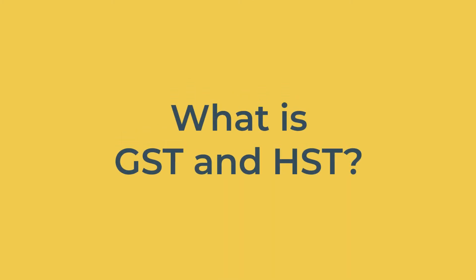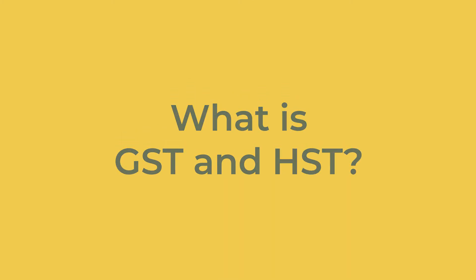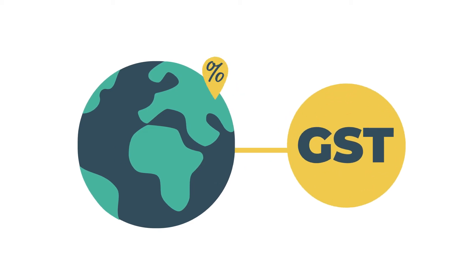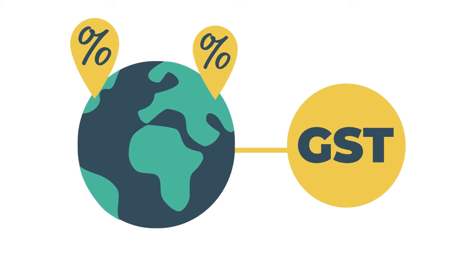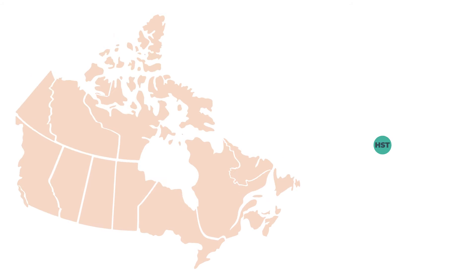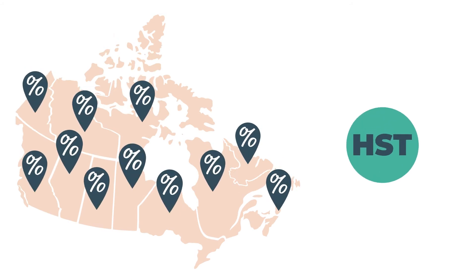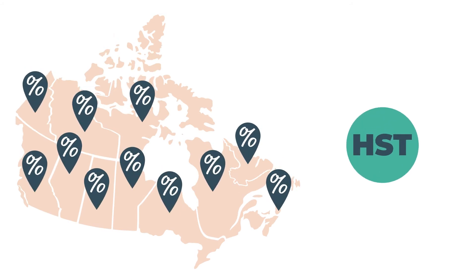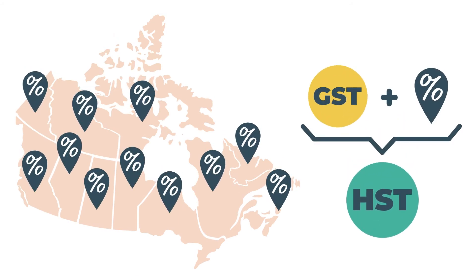First, what is GST and HST? Goods and services tax is a consumption tax used in several countries, including Canada, while HST — harmonized sales tax — is Canada-specific. HST is when the national GST and a local province tax are added together.